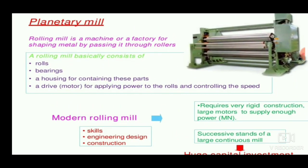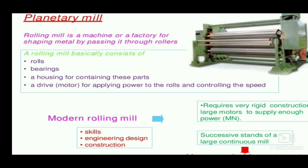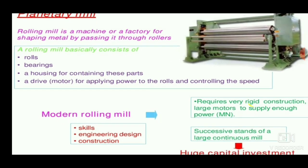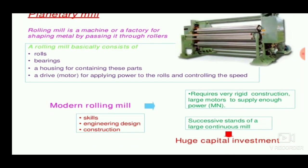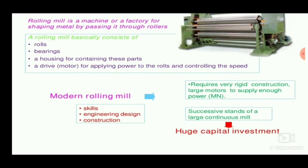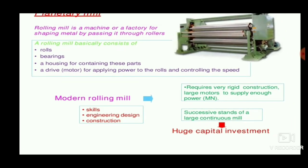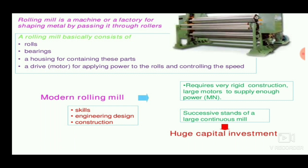A rolling mill is a machine or factory for shaping metal by passing it through rollers. It consists of rolls, bearings, housings, and a motor for actuation. Modern rolling mills require very rigid construction and large motors to supply enough power, because when large compressive forces are applied, sheets with fine grains and good quality are produced.